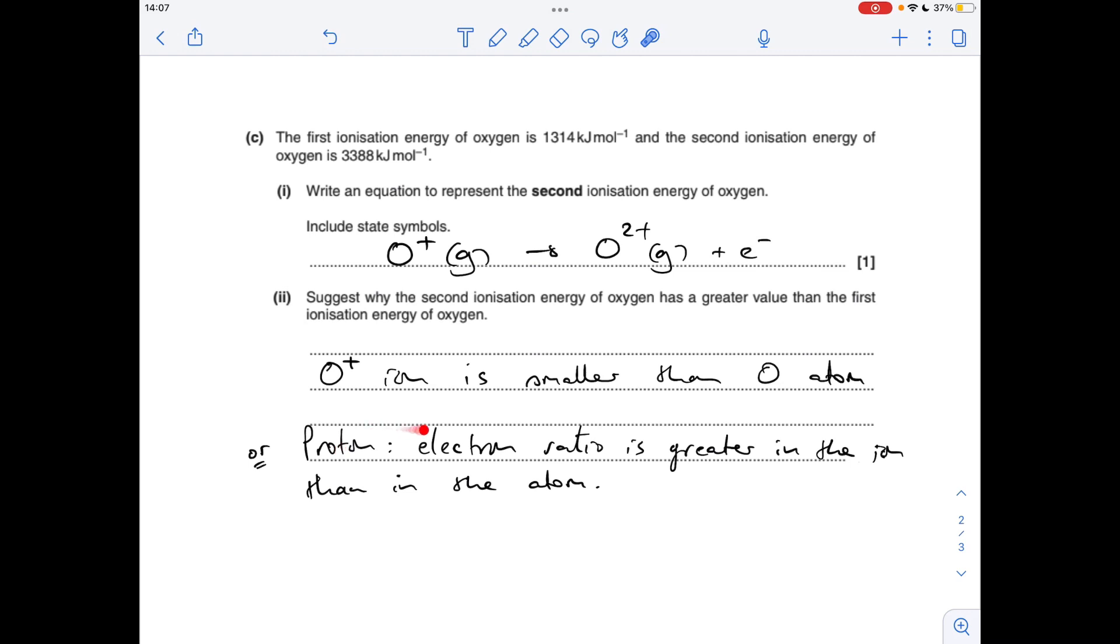Alternatively, you could talk about the proton to electron ratio. In the atom you've got 8 protons and 8 electrons, so it's a 1:1 ratio between the two charged particles, whereas in the 1+ ion you've lost an electron, so you've got a higher proton to electron ratio in the ion. Again, that would lead to a greater attraction on the remaining electrons.